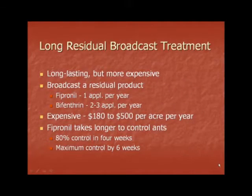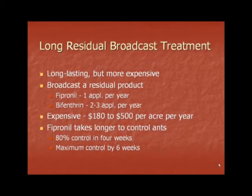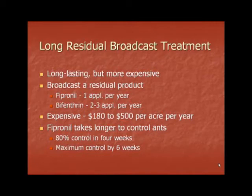Long residual broadcast treatment is long lasting but much more expensive. This involves broadcasting a residual product such as fipronil or bifenthrin. Fipronil is applied once per year; bifenthrin is applied two to three times per year. It is very costly, with an expense of $180 to $500 per acre per year. Fipronil takes longer to control fire ants; however, you will have 80% control within four weeks and maximum control by six weeks.